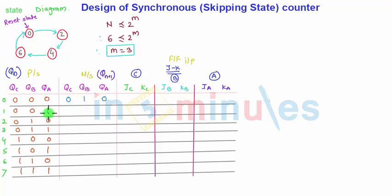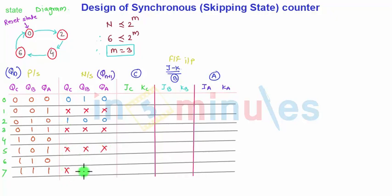State 1 is a don't care case. State 2 goes to state 4, so I write the code for 4, which is 100. States 3, 5, and 7 are all don't care cases. State 4 goes to 6, so I write the code for 6, which is 110. State 6 goes back to 0, so I write 000. This completes the next state table.